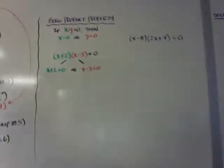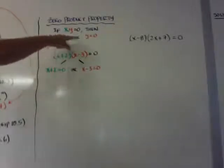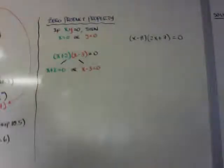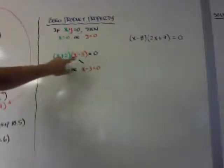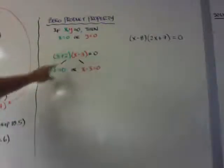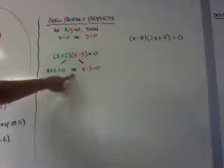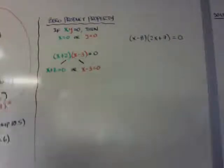So the zero product property, I have it listed here for you guys. If x times y equals zero, then either x has to equal zero or y has to equal zero. One of these two have to equal to zero, in order for it to equal to zero. So if I have (x + 2)(x - 3) = 0, either the x + 2 has to equal to zero, or the x - 3 has to equal to zero. One or both of them have to equal to zero.